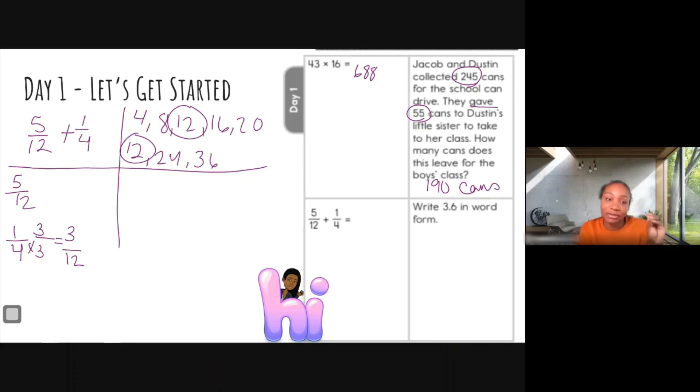So I need to go ahead and add here. So 3/12, we just renamed the fraction in this box, and I can solve it here in the last step. So 5 plus 3 is 8, and the 12 stays the same. But I'm not done because I can actually simplify this fraction.